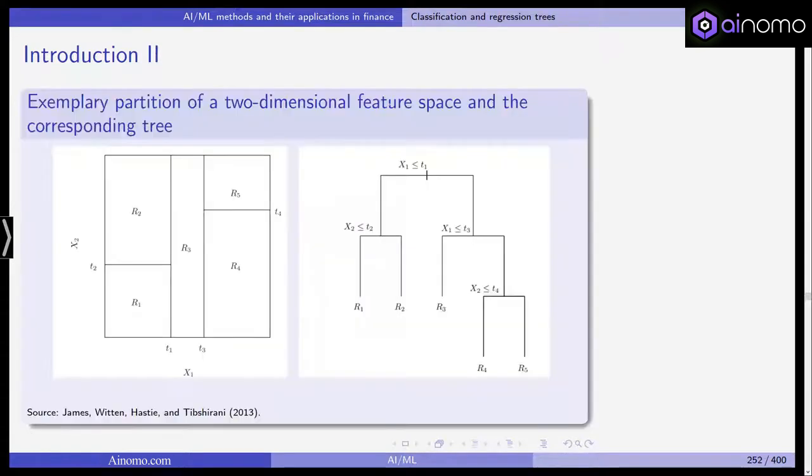So this is what a tree looks like on the right hand side and it corresponds to the segmentation on the left hand side. So you can see we have two predictors x1 and x2 and we are segmenting the predictor space into one, two, three, four, five boxes.